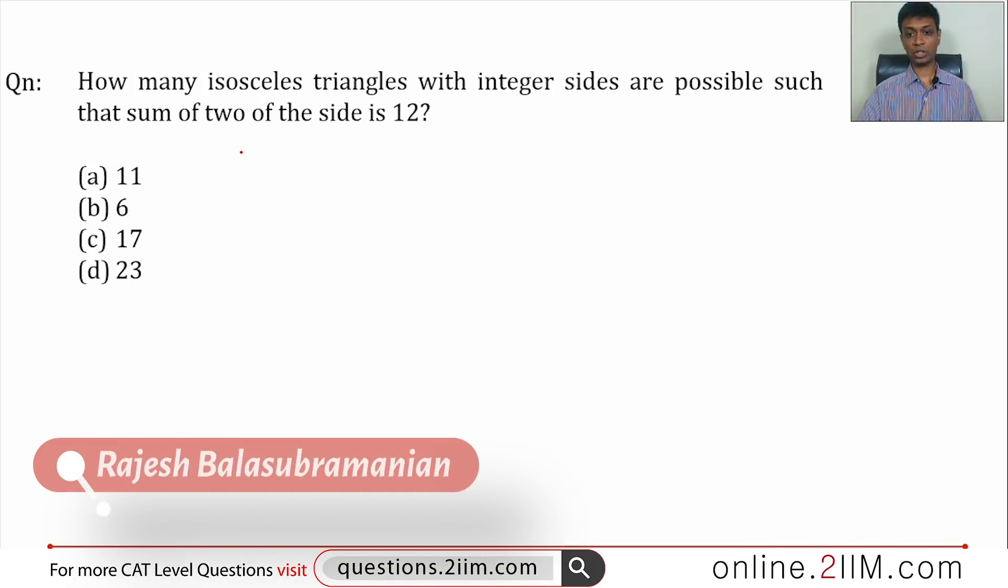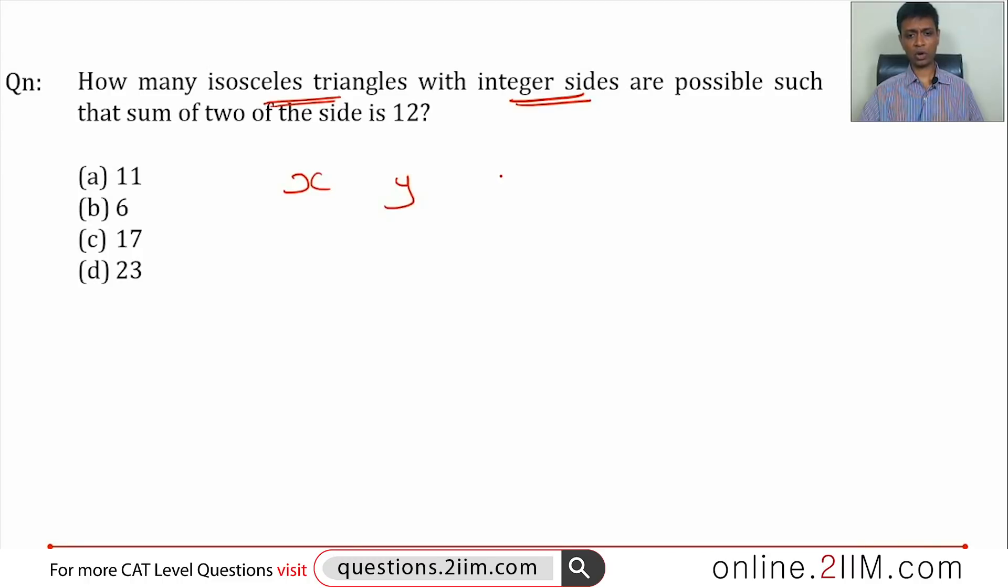How many isosceles triangles with integer sides are possible such that sum of two sides is 12? If the sides were x, y and z, sum of two sides add up to 12, let's say x plus y equals 12. It is an isosceles triangle, so two sides should be equal in length and all of these are integer values.